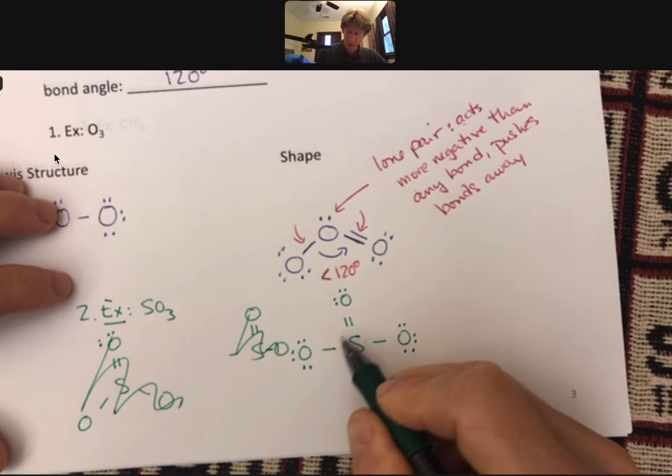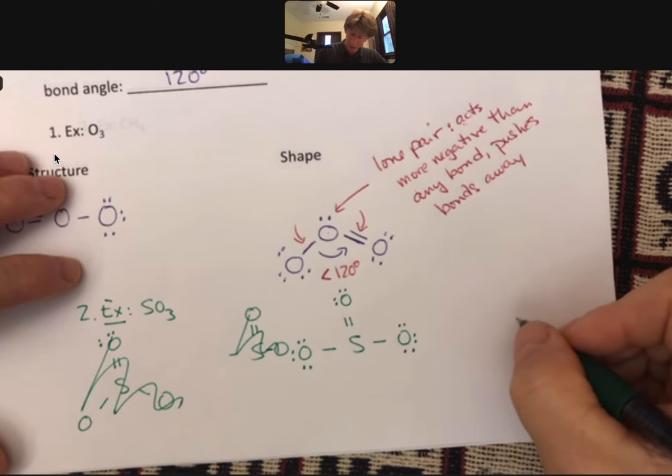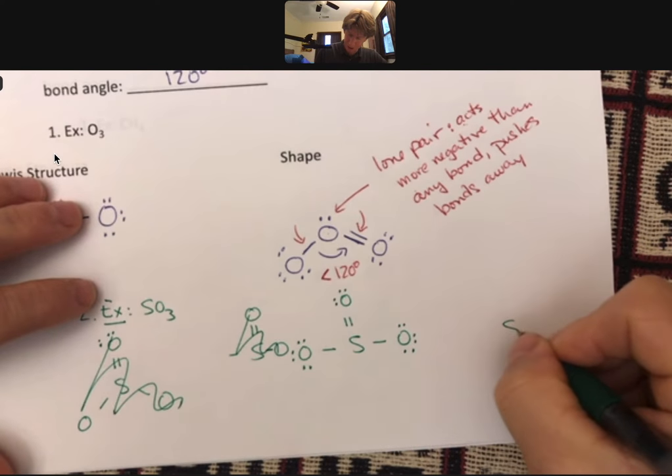It can, but it does not have to, so I will make sure that it does not show shape. We will see that our best Lewis structure here is single, double, single bond. And that means there are one, two, three electron groups around the central atom, the sulfur. And so now when I draw it with this shape, I'm sort of going to draw this again.